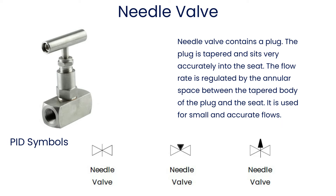Needle valve contains a plug. The plug is tapered and sits very accurately into the seat. The flow rate is regulated by the annular space between the tapered body of the plug and the seat.